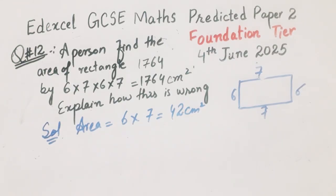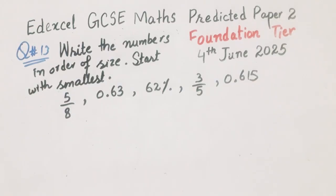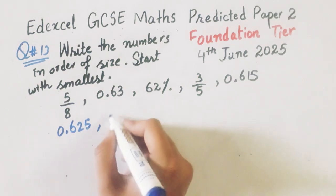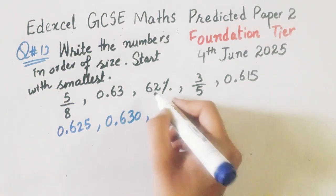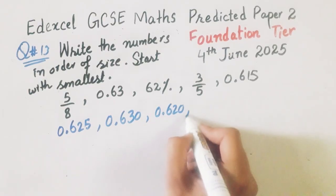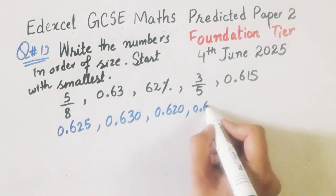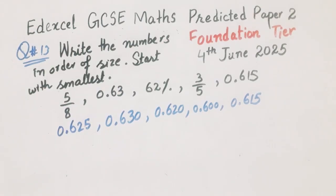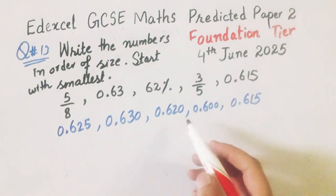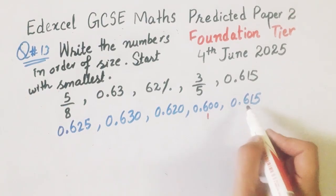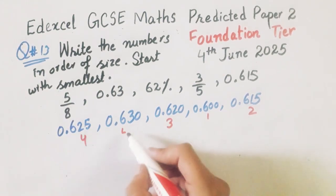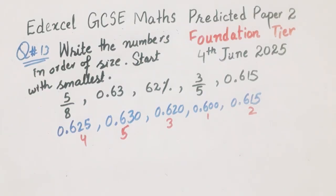Now we will solve question number 13. The question is: write the numbers in order of size, starting with the smallest. First of all, 5/8 can be written as 0.625, and 0.63 can be written as this one, and 62% can be written as 0.620, and 3/5 can be written as 0.6. So first of all we will write the smallest number, then greater than this, and then the 4th and 5th values.